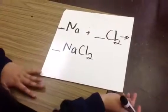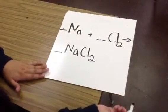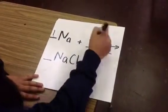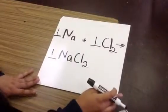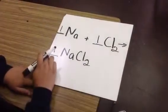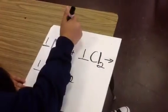This equation is Na plus Cl2 yields NaCl2. So when you balance it, you'll put a 1 in front of the Na, another 1 in front of the Cl2, and a 1 in front of your product. It works out because you have 1 Na, you have 2 Cl2s, so 1 times 2 equals 2, so it balances. And this is an example of synthesis.